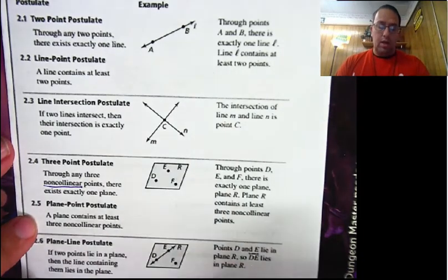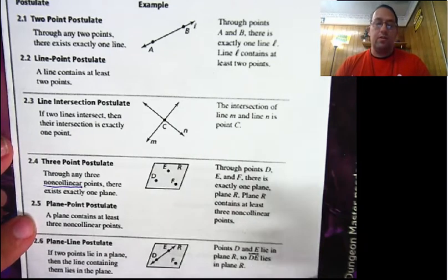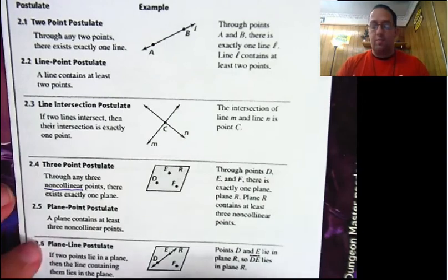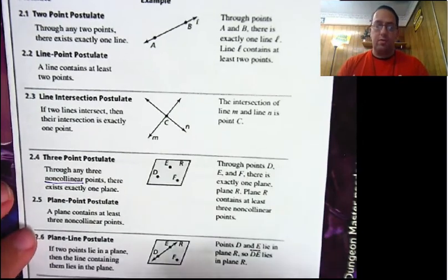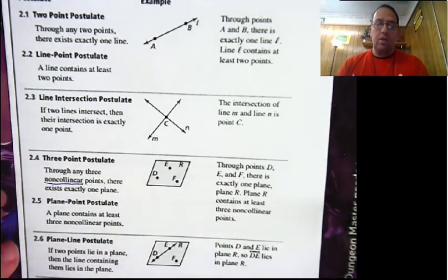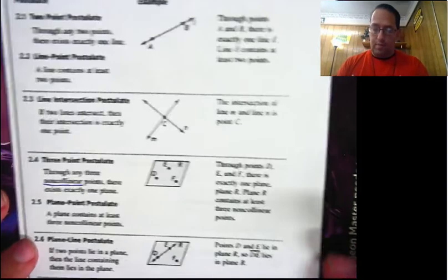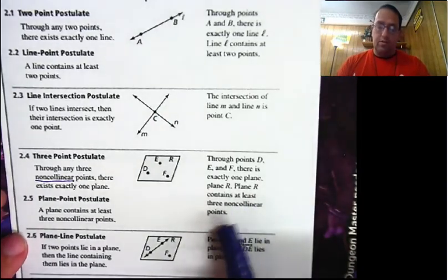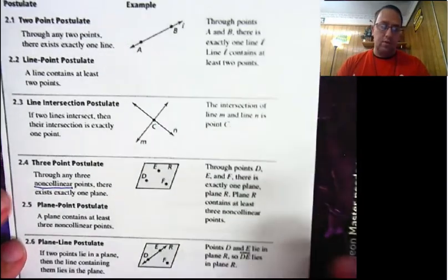And the plane-point postulate says that a plane contains at least three non-collinear points. Again, planes are infinite — they have an infinite number of points — so they're going to have at least three that are non-collinear. Plane R contains at least three non-collinear points.